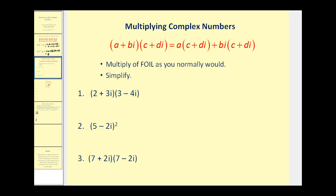Now let's talk about multiplying complex numbers. We will multiply complex numbers just like we would multiply two binomials together. We'll multiply a times the quantity c plus di, then we'll multiply bi times the quantity c plus di, then we'll combine like terms and simplify. So let's go ahead and give it a try.